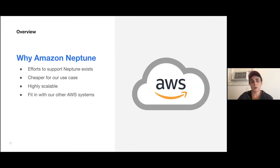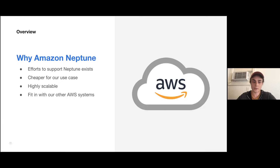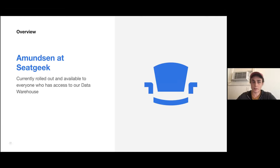This opened up a lot of doors because we could then use Amazon Neptune. I want to say thank you to the Square team for building a very solid implementation that made integrating the data builder with Neptune really easy. If you didn't see the video last August, Josh gave a really informative and useful presentation. Neptune was cheaper for our use case, highly scalable, and fit in with our other AWS systems so our infra team had no problems with us using it. Since about August, we've had great success with Amundsen using the Neptune integration. Everyone who has access to our data warehouse has access to Amundsen, and now people just pass around links to Amundsen instead of asking questions about how tables work together.